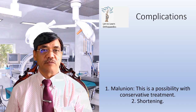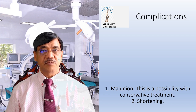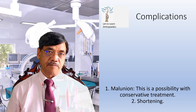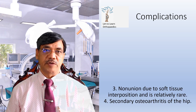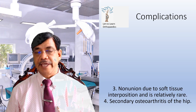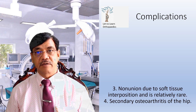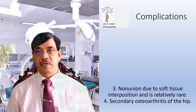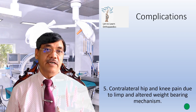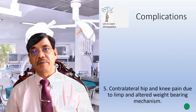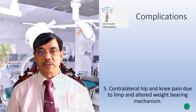The complications of subtrochanteric fractures include: first, malunion, which is a possibility with conservative management. Second, shortening. Third, nonunion due to soft tissue interposition, which is relatively rare since it still occurs in the cortical area. Fourth, secondary osteoarthritis of the hip. Finally, contralateral hip and knee pain due to altered weight-bearing mechanism.